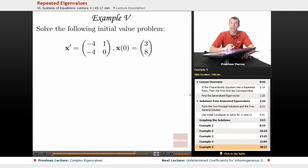In Example 5, we're going to solve the initial value problem with matrix (-4, 1; -4, 0) and x(0) = (3, 8).